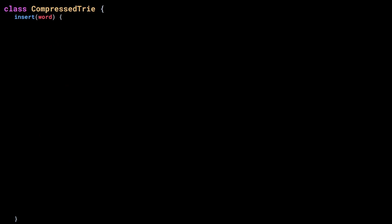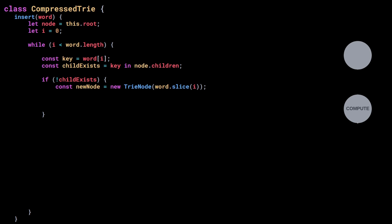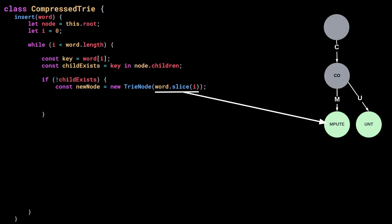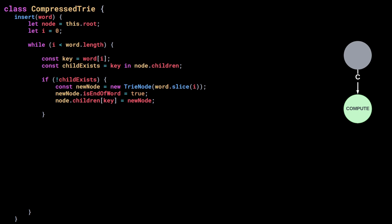Let's move on to the insert method. Say we want to insert the word 'compute'. We start at the root and iterate over the letters of the word, storing the current letter in a constant called key — in this case it's the first letter. We search for a child of the root that starts with the letter C, but the root has no children. In that case, we create a new node storing the prefix of the word we are inserting — here the prefix is the entire word, but it usually is just a suffix of the word, which is why we use slice. This node represents the end of a word, so we set isEndOfWord to true and make this new node a child of the root, then break out of the while loop.